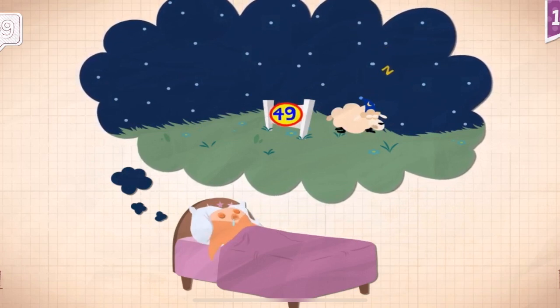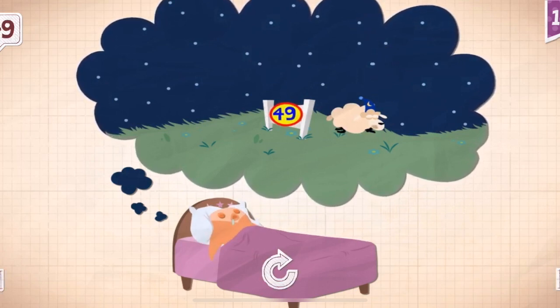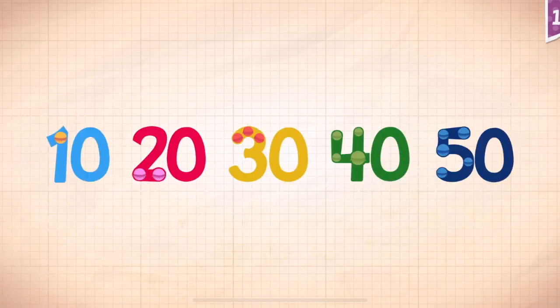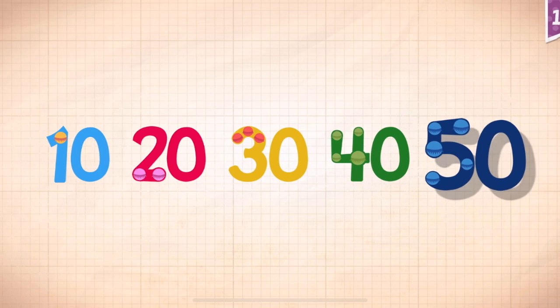Let's go! Sherbert counted forty-nine sheep and finally fell asleep. Count by tens: 10, 20, 30, 40, 50.